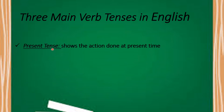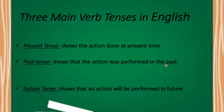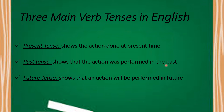The present tense shows the action done at present time. The past tense shows that the action was performed in the past. It may have been performed in the near or far past, while the future tense shows that an action will be performed in future.